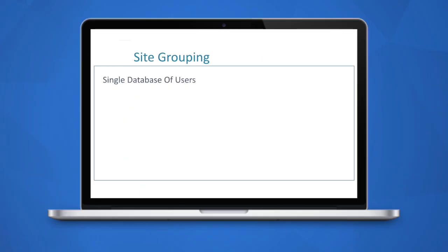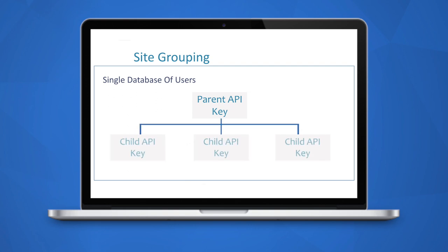Site Grouping is the process of grouping multiple child sites together under a parent API key so that they share a common database of users. As such, when we integrate RAS with Site Groups, it's important to remember that there is only one database of users shared among the entire Site Group.